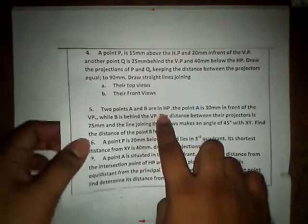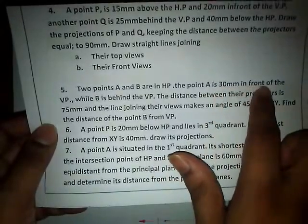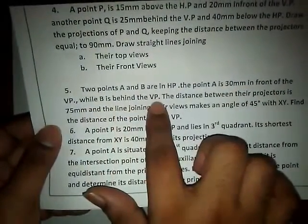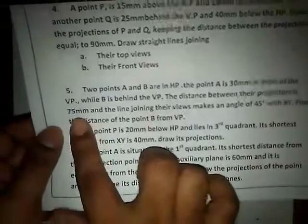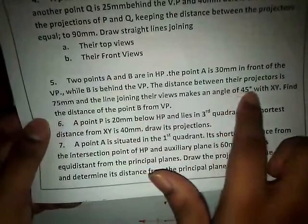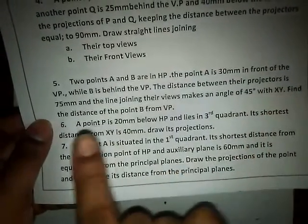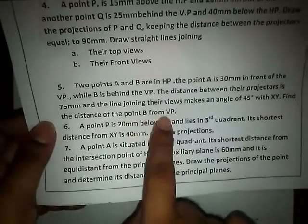Points A and B are in HP. Point A is 30mm in front of VP, while B is behind the VP. The distance between the projectors is 75mm, and the line joining their top views makes an angle of 45 degrees with the XY reference line. We need to find the distance of point B from VP.